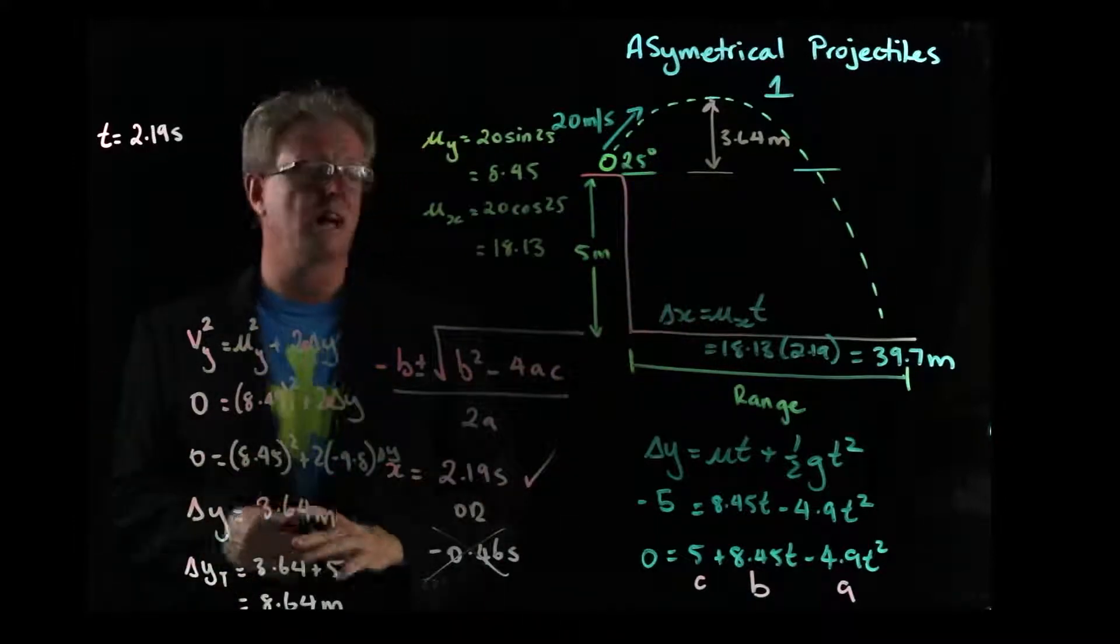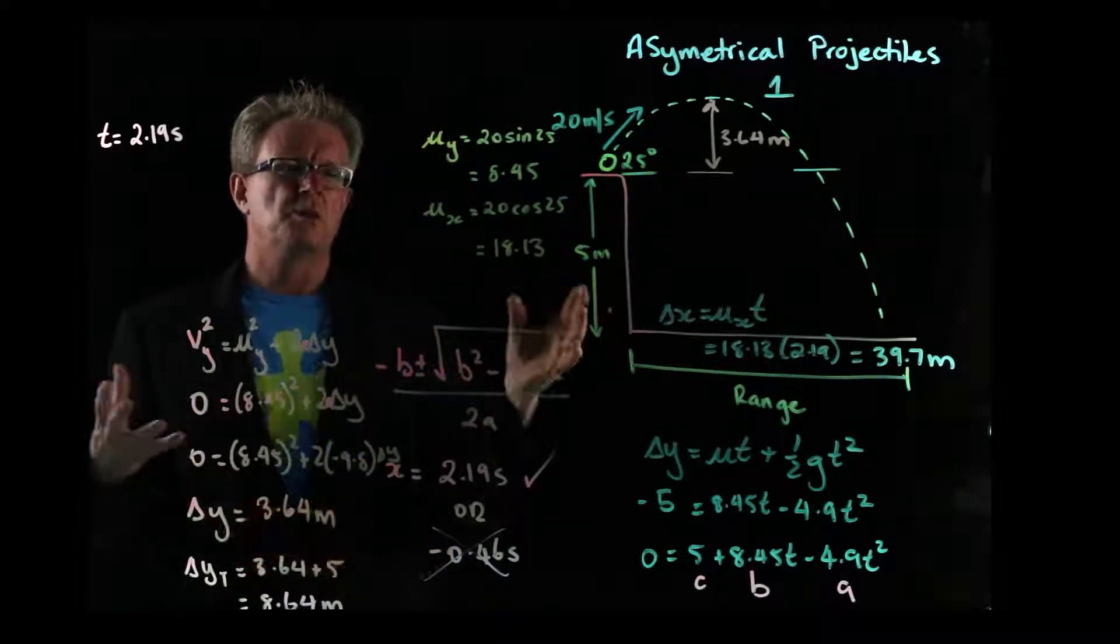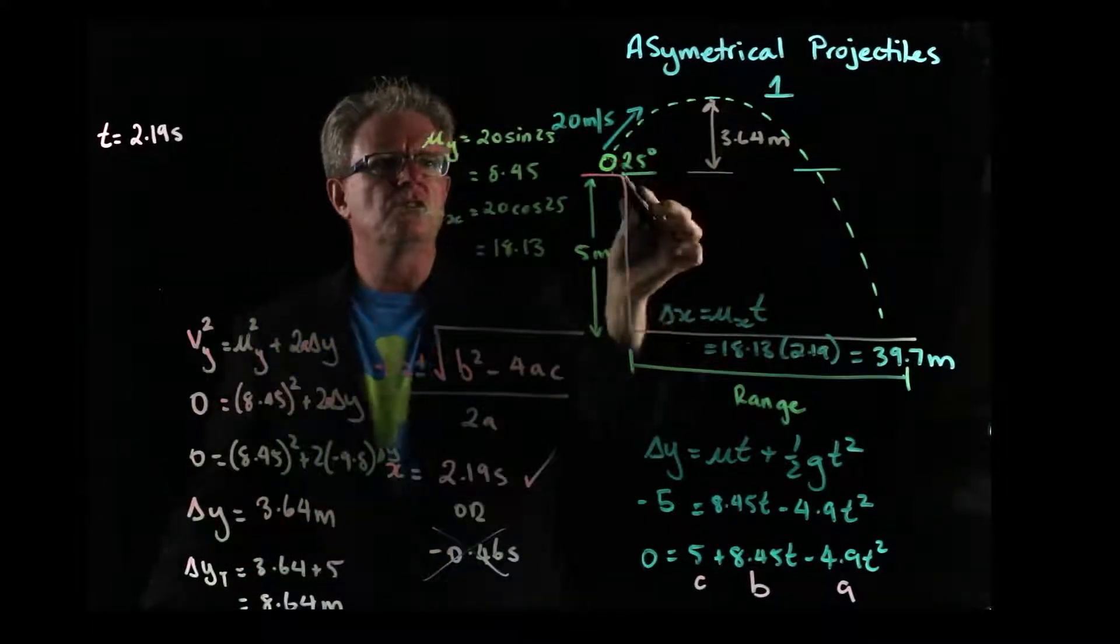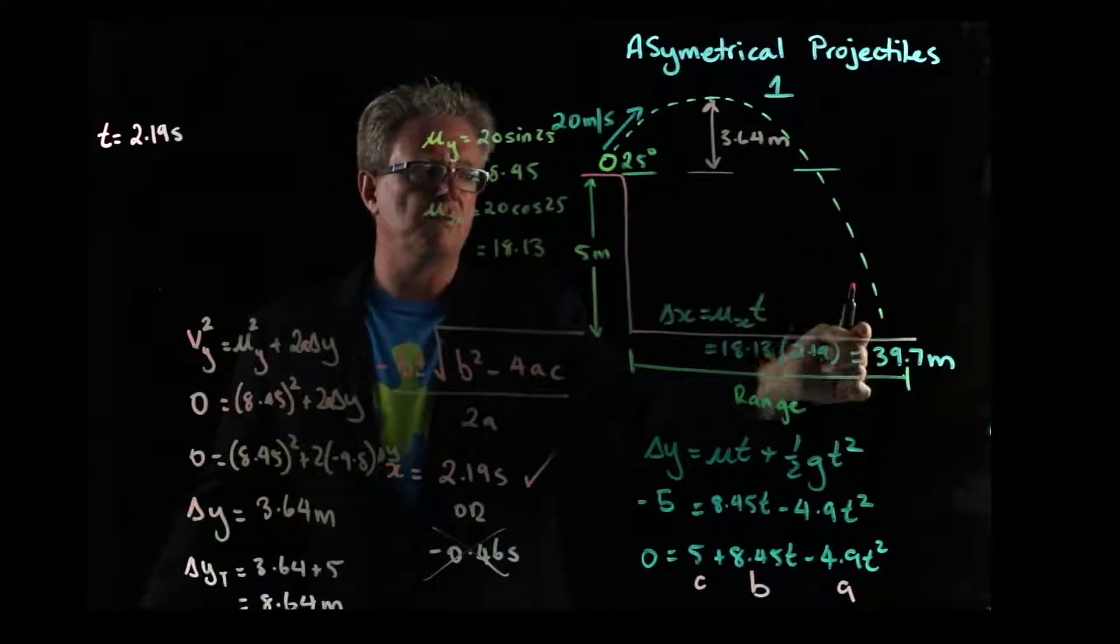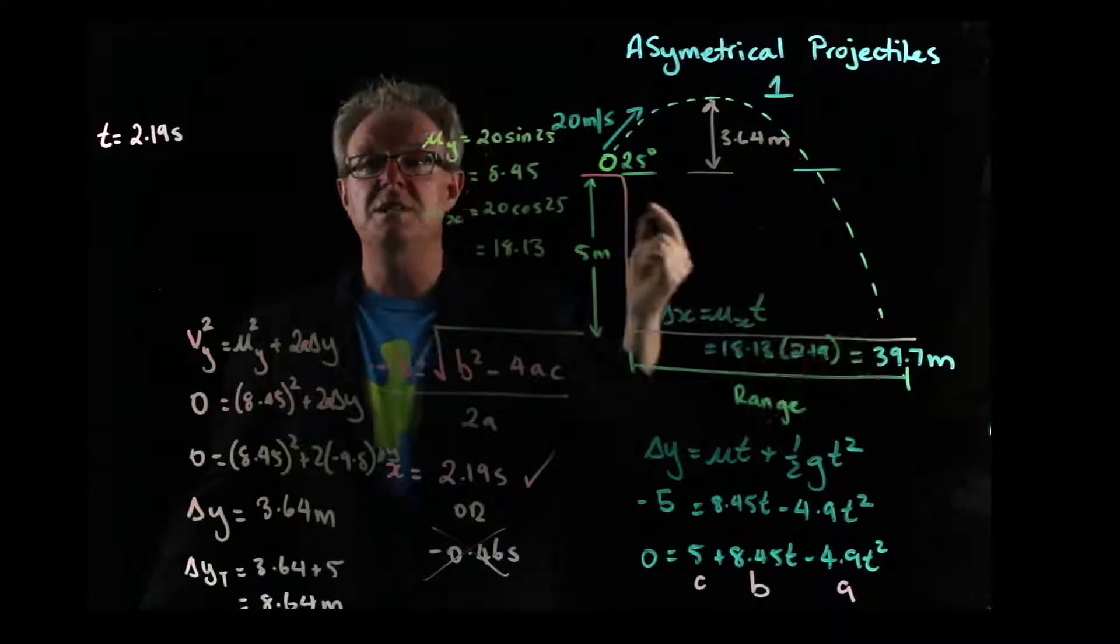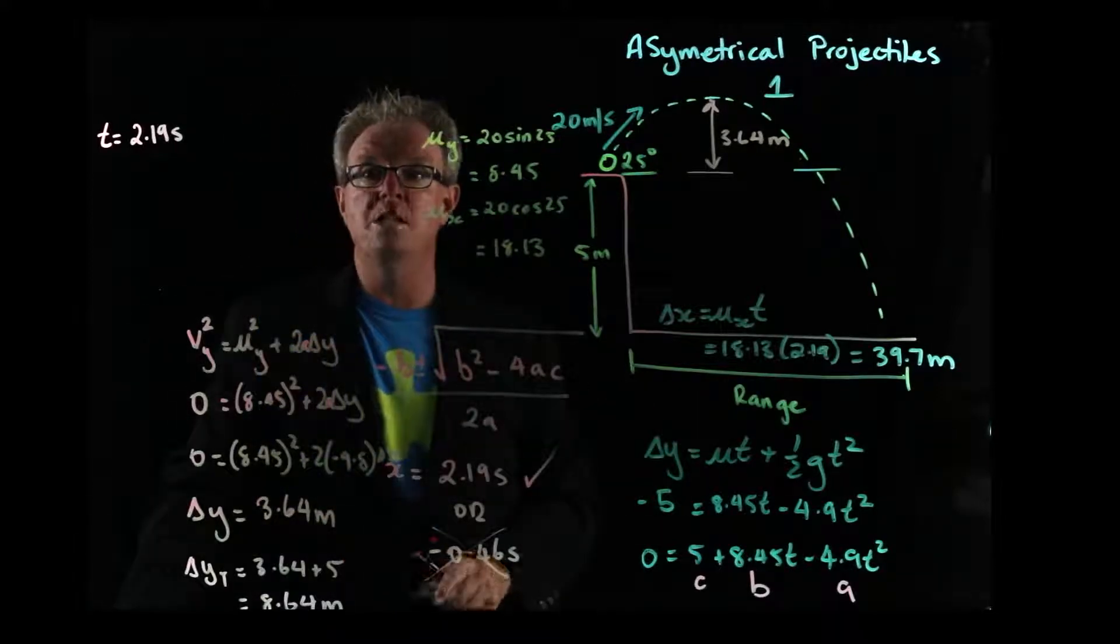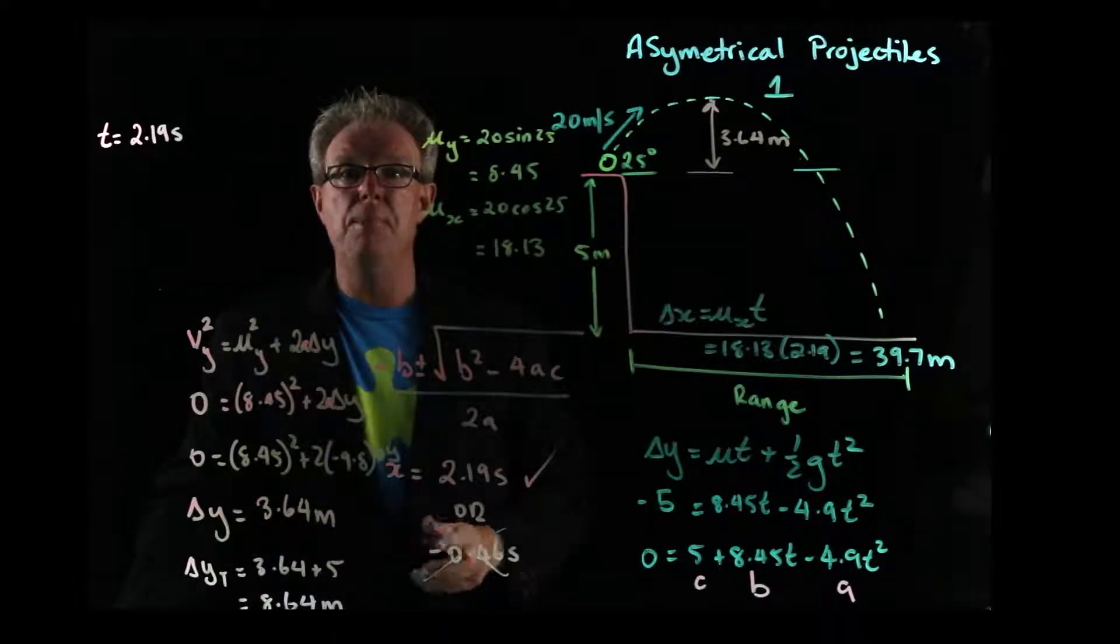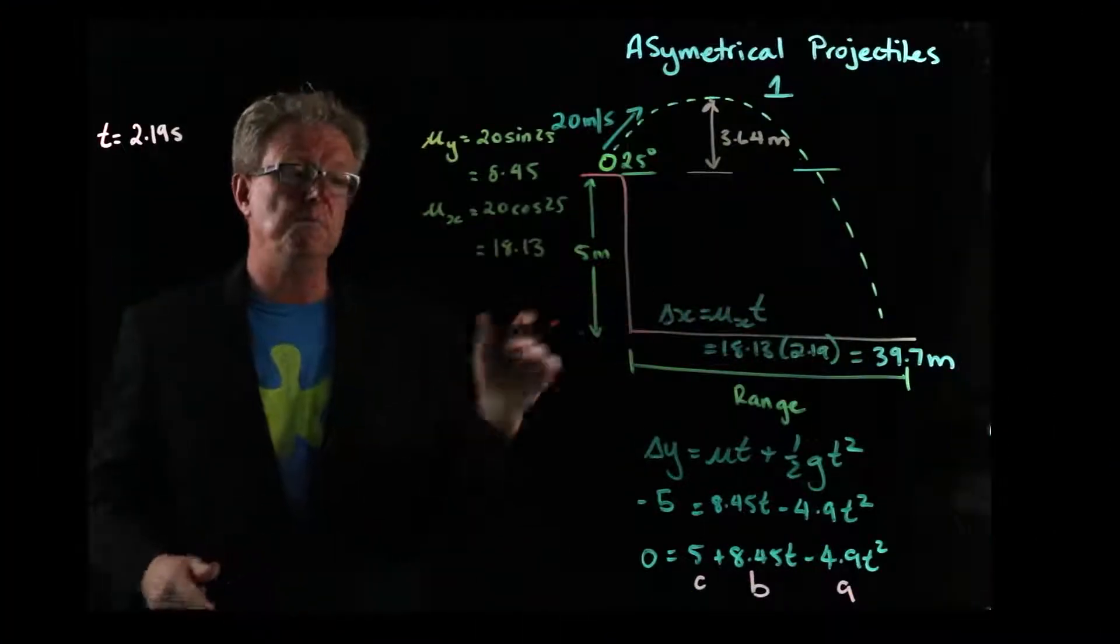Only the last thing that sometimes they ask you is, what is the velocity of the particle when it lands? Because remember, when we had symmetrical, the initial velocity here was equal to the final velocity. But because we've got an extra travel time here, the velocity is going to be different. So I'm going to rub some of this out to give me some more working space. And then we're going to find the final impact velocity of this cannonball.